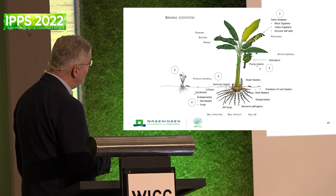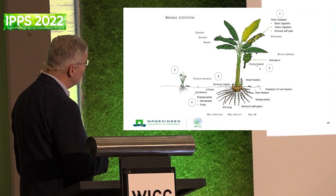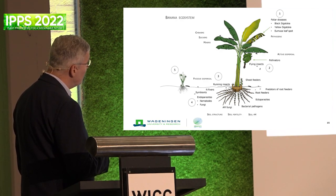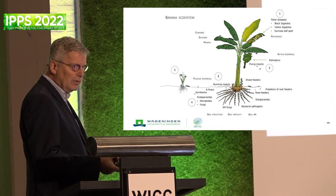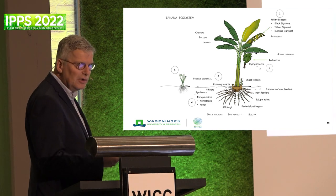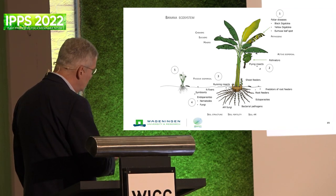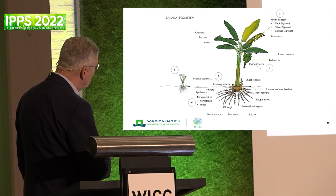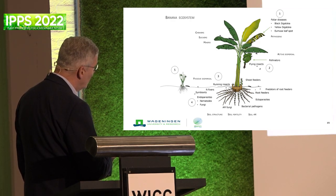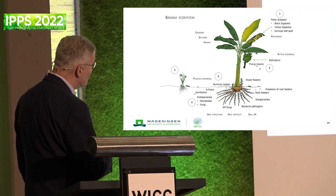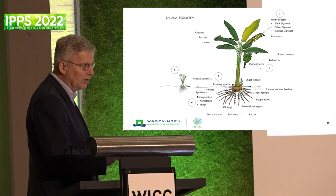I will focus on Black Sigatoka, a foliar pathogen related to Zymoseptoria tritici - they're both Dothideomycetes with a very active sexual cycle. I will also look at Fusarium fungi that infect the roots and colonize the vascular system - the plants start wilting, eventually die, and there is no yield.